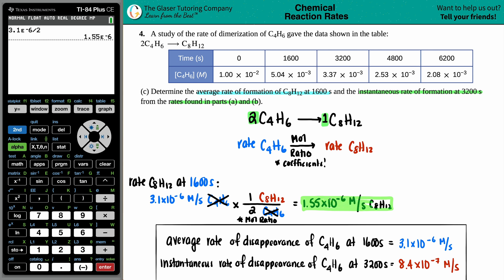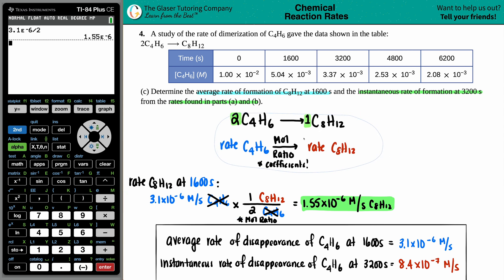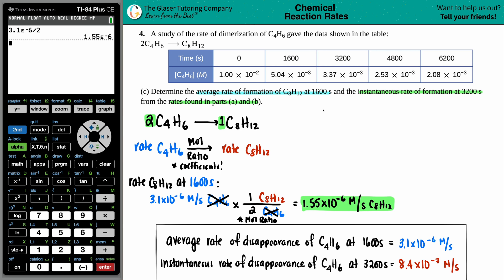Now we just have to do the same thing for the instantaneous one, but it's the same exact idea. Let's do the rate of C8H12 at the 3200. It does not matter if it's an instantaneous or an average if you're doing the mole ratios, because the way of doing it is the same - you're just doing the mole ratio.